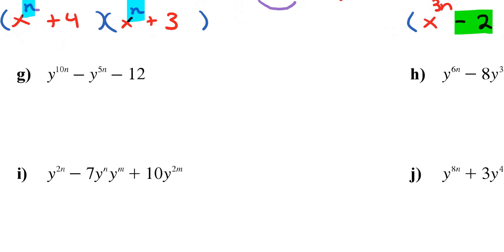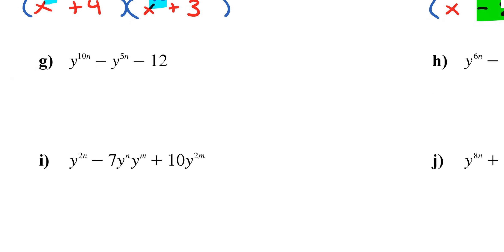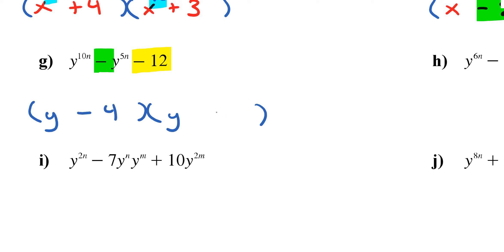Letter G: I need two numbers that multiply to negative 12 and combine to negative 1. That's negative 4 and positive 3. I have x to the 10n, and since 10n equals 5n plus 5n, I need a 5n in each bracket.